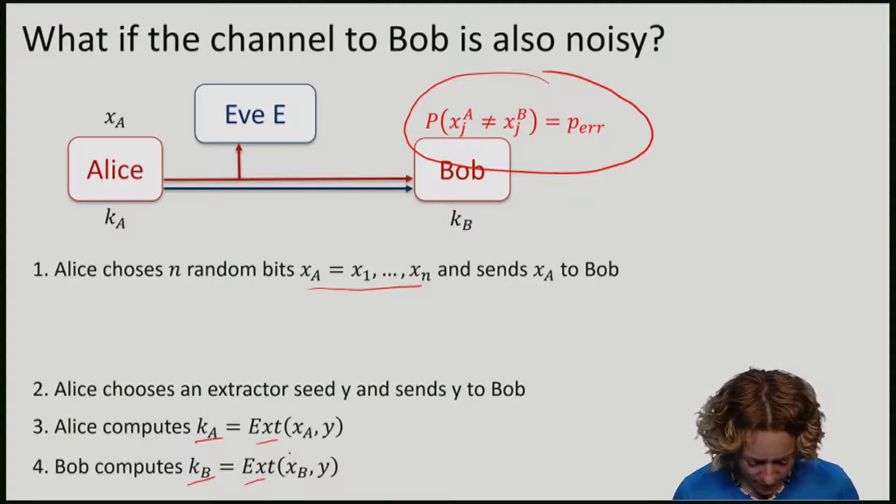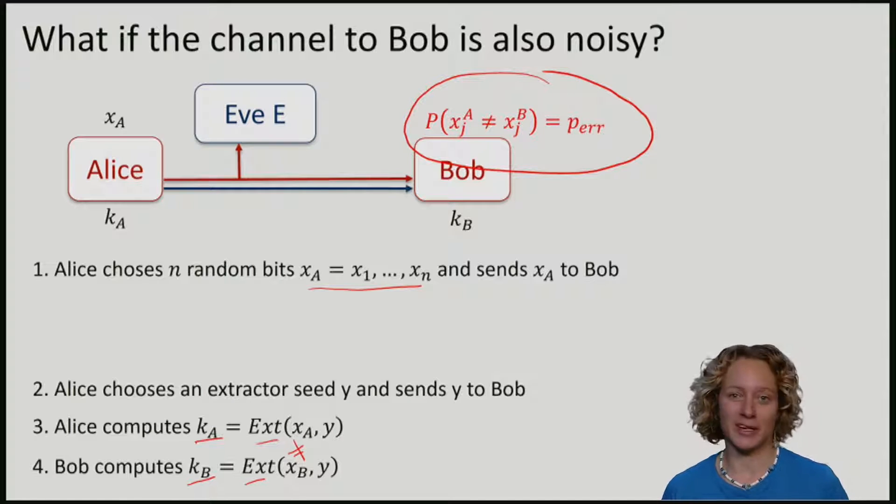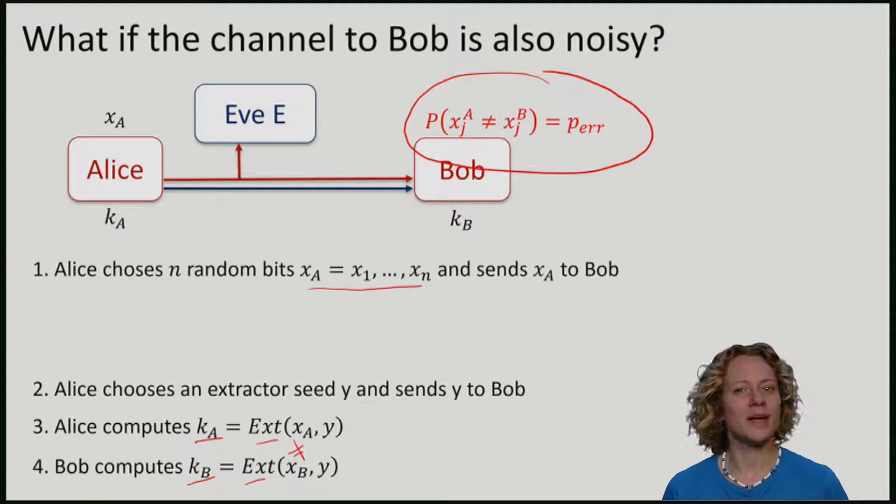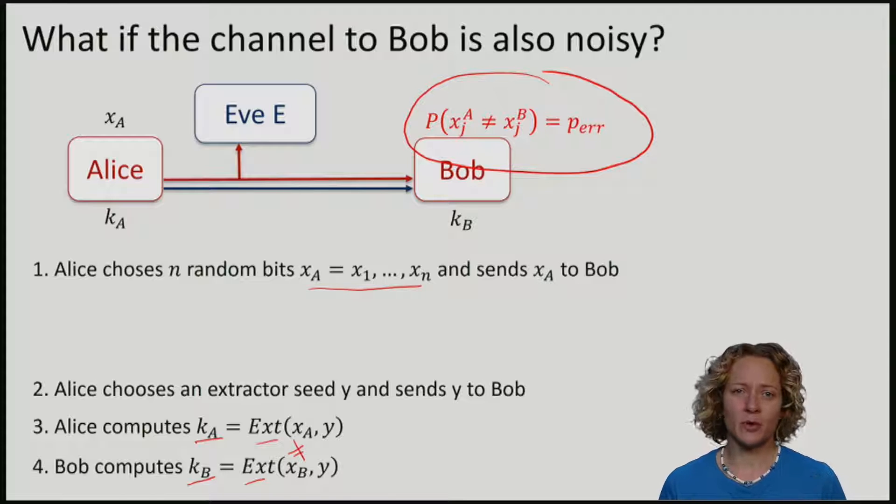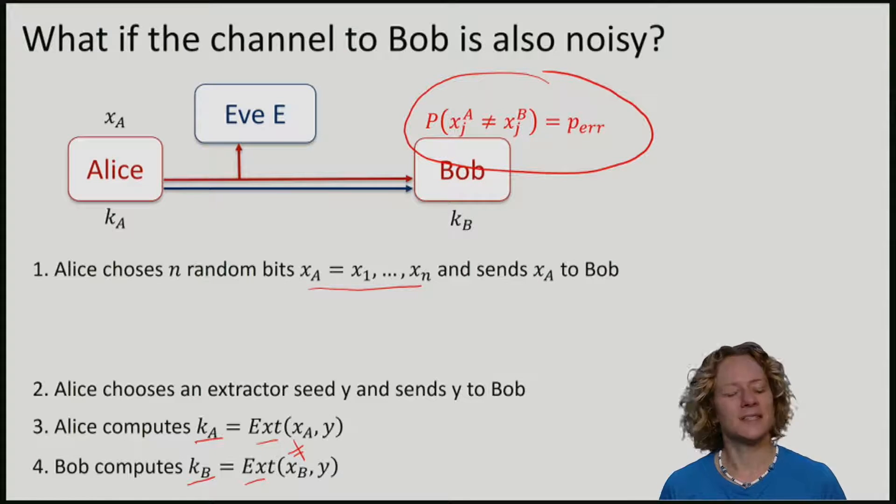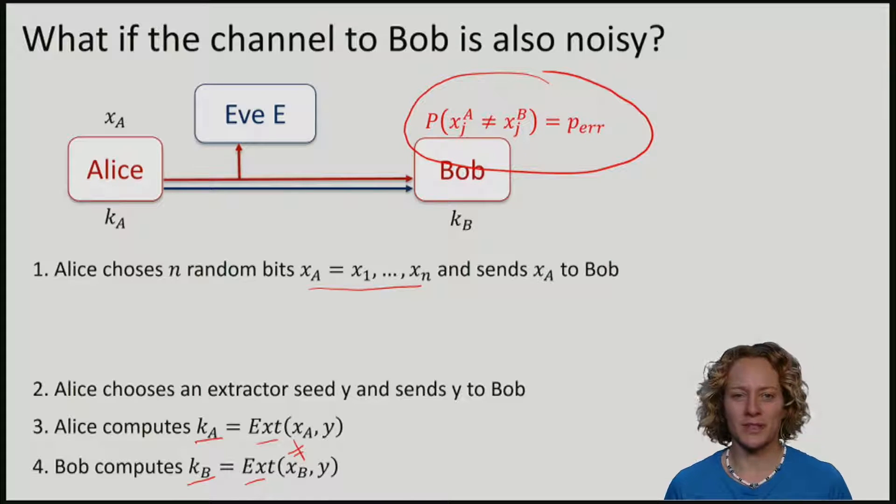Now xa is most likely not equal to xb. In fact, if we have a small error on each bit, the probability that the raw key xa will be the same as xb is very small if n is large. This means that it is actually extremely unlikely that ka is equal to kb, and hence our protocol is no longer correct.